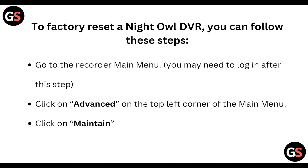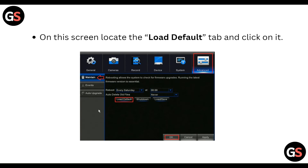First of all, go to the recorder main menu — you may need to login. After this step, click on 'Advance' on the top left corner of the main menu, and then click on 'Maintain'.